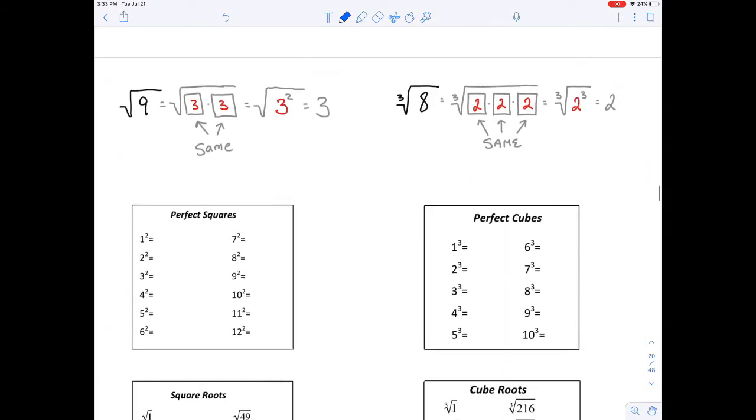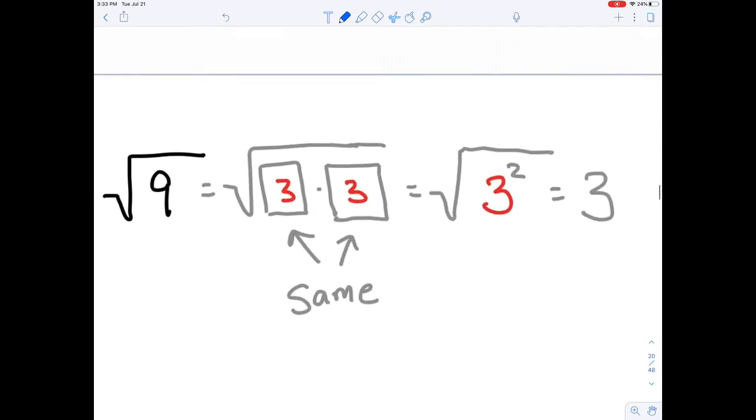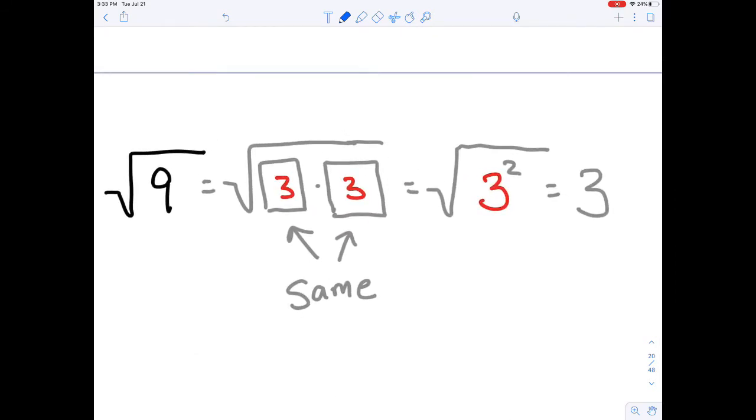I have two examples. The first one is the square root of 9. Now, it's already worked out, but the concept is the square root, that's that radical symbol right there, the thing I just traced in blue. It's called a radical or a square root.